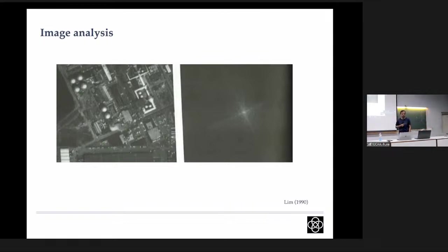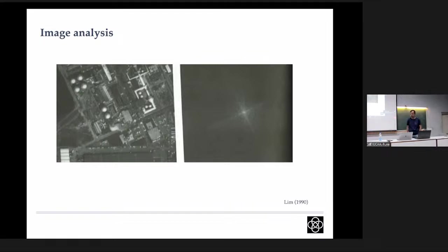We'll discuss some of these things more during the hands-on session in the afternoon. For image analysis: we take the sampling data, carry out the Fourier transform and make the image. Let us also see how many clean components we really need to make a good image. I'll show some examples from image processing. You have an image, take its Fourier transform - and if you take just the top 12 dominant Fourier components and throw away the rest, the result still looks very much like the original.